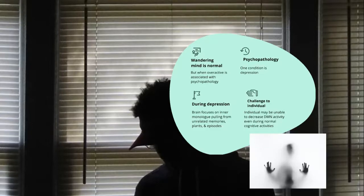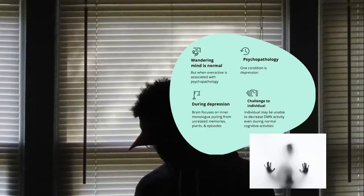One of those psychopathological forms is depression. What goes on in the default mode network when one is experiencing depression? The brain is focused on this inner monologue, pulling from unrelated memories, plans, and episodes. The problem for individuals experiencing depression is that they may be unable to decrease the over-activation of the default mode network even during normal cognitive activities, so this inner dialogue is constantly going on and can be very disruptive to the depressed individual.